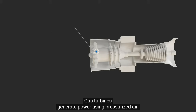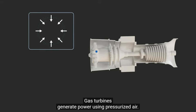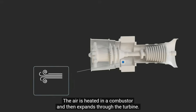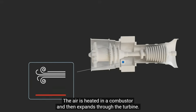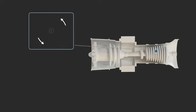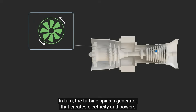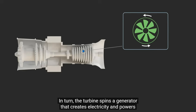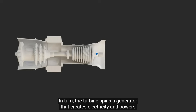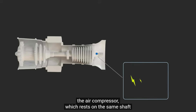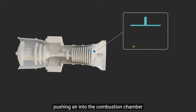Gas turbines generate power using pressurized air. The air is heated in a combustor and then expands through the turbine. In turn, the turbine spins a generator that creates electricity and powers the air compressor, which rests on the same shaft, pushing air into the combustion chamber.